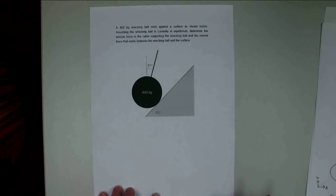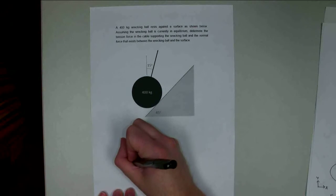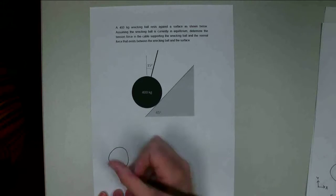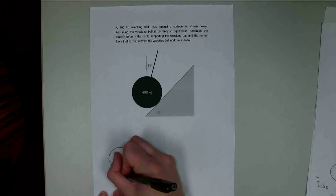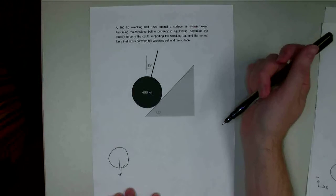Step one in our equilibrium analysis is going to be to draw a free-body diagram. So we draw our wrecking ball down here. We're going to have a gravity force, the weight of this thing. Since this is metric, I need to convert this to newtons.